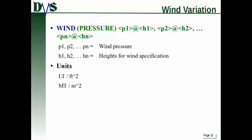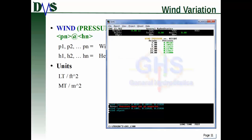Here's an example of how I've defined a wind pressure: 0.1 at 5, 0.12 at 10, 0.15 at 20. Then I asked it to give me a report, and you can see it does vary with height.